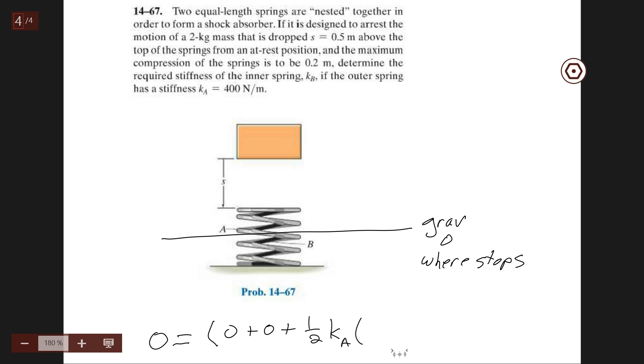Let's see. Designed to arrest motion at 0.5m, rest position. The springs are supposed to go down 0.2m. Right now, they're free, correct? Nothing's touching them. So 0.2m. How much is the spring A squished?